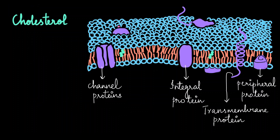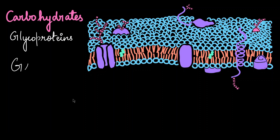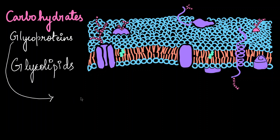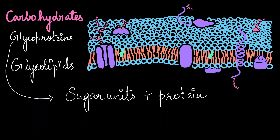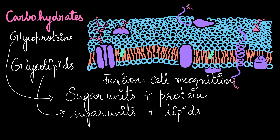Cholesterol is also present in the membrane and contributes to its fluidity. In addition to lipids and proteins, the cell membrane also contains carbohydrates. Carbohydrates are present either as glycoproteins or glycolipids. Glycoproteins are a combination of sugar units with proteins — surface proteins with sugar units attached. If sugar units are directly bound to lipids, they are called glycolipids. The main function of carbohydrates on a cell membrane is cell recognition. When components like proteins, carbohydrates, and cholesterol are freely able to move within the cell membrane, that property is termed fluidity.